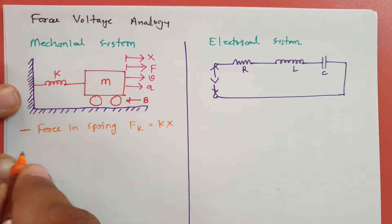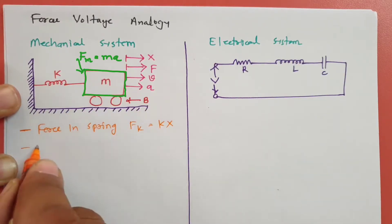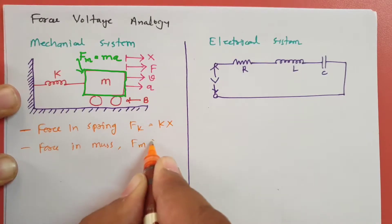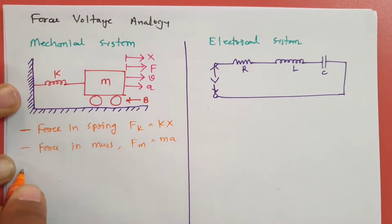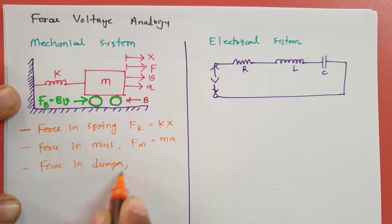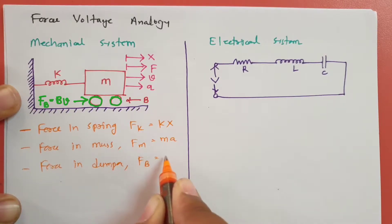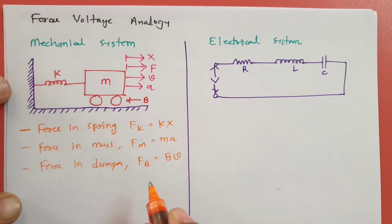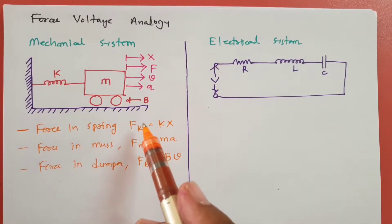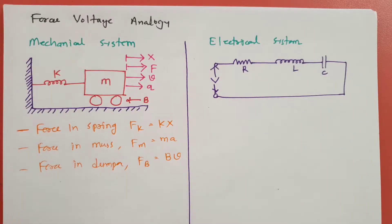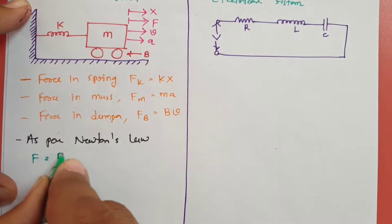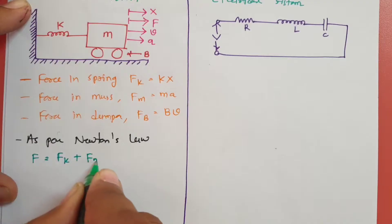Force in mass M is mass into acceleration, so F_M = M × A. Force in the damper, F_B, is damping constant B into velocity. As per Newton's law, total force F is equal to the algebraic sum: F = F_K + F_M + F_B.